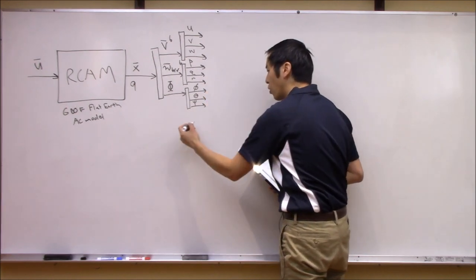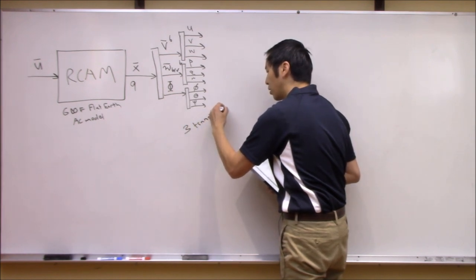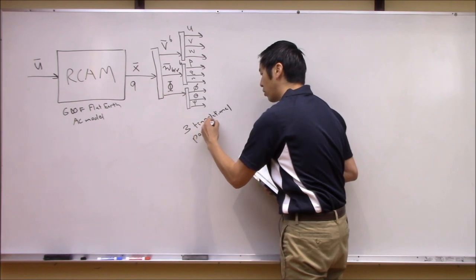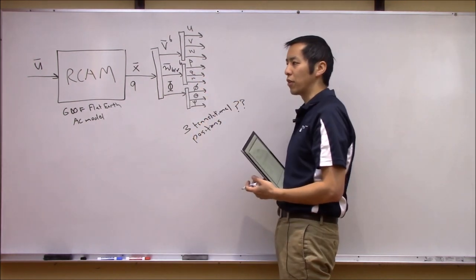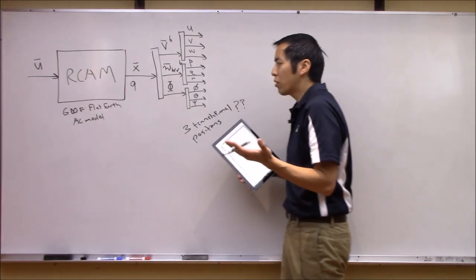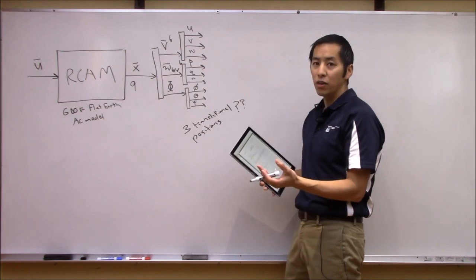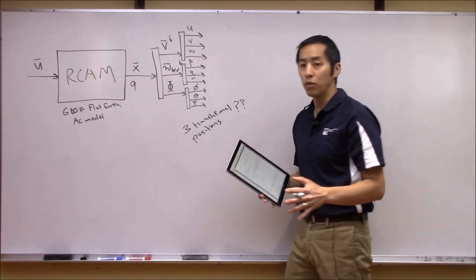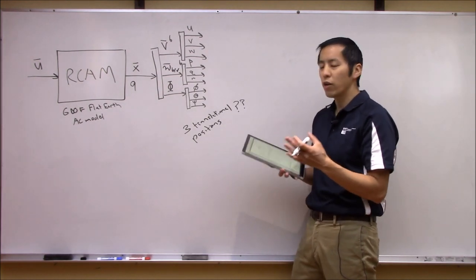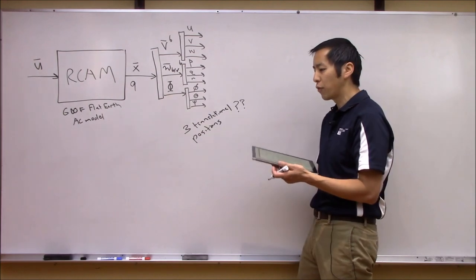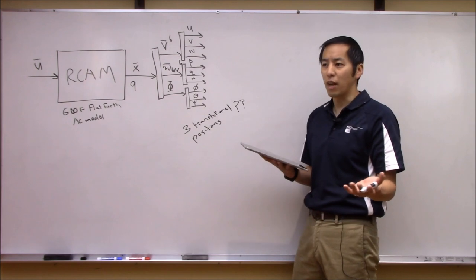So the question is: where are the three translational positions? They didn't show up in the state vector, therefore they didn't show up in the dynamics. That was because the way we modeled this vehicle - it was a flat earth model - and we said the aircraft behaves the same no matter where it's positioned in space, whether you're flying over Seattle or Portland.